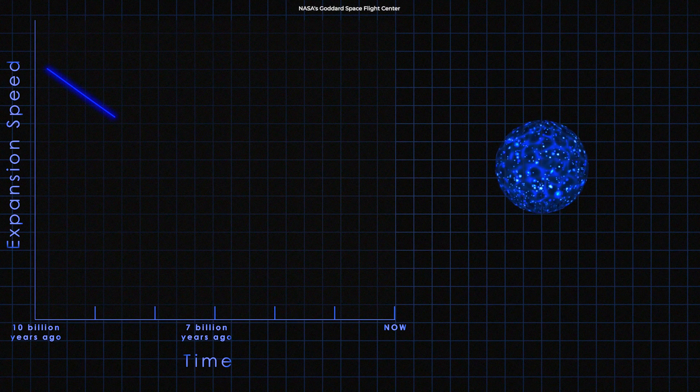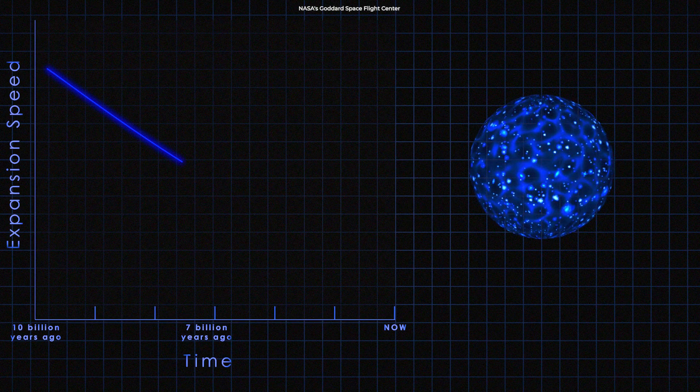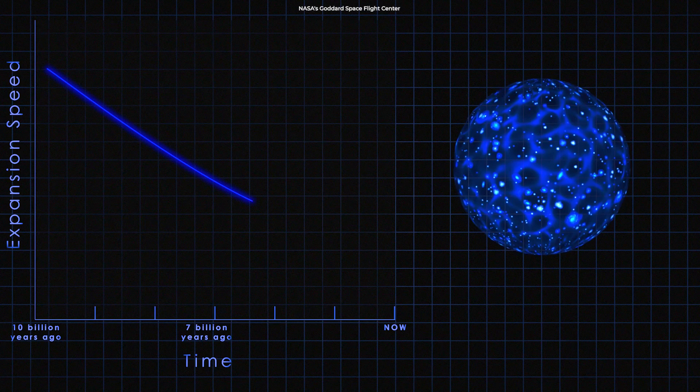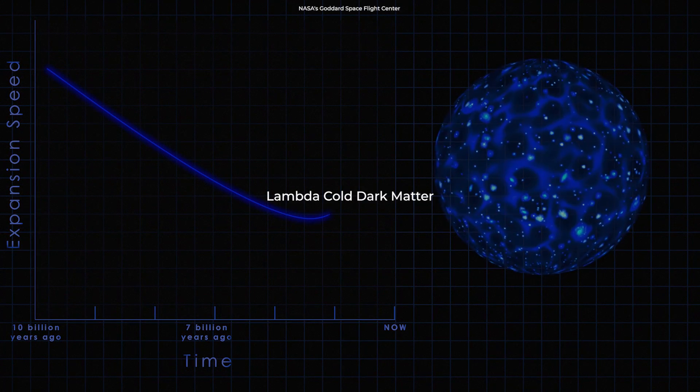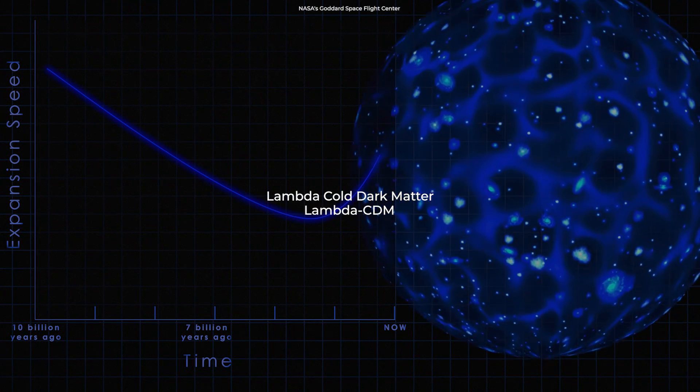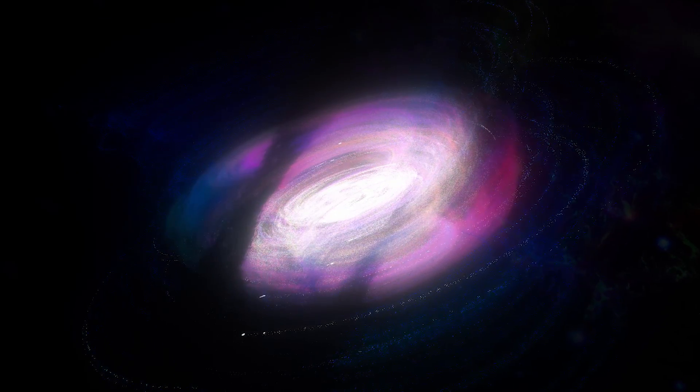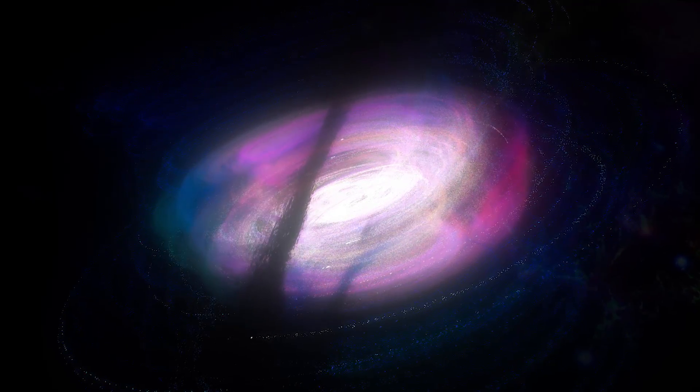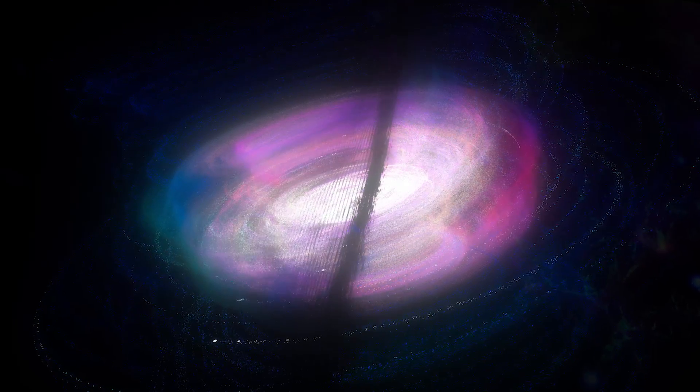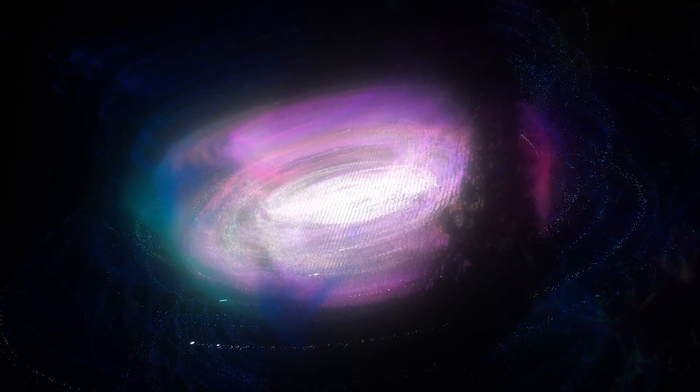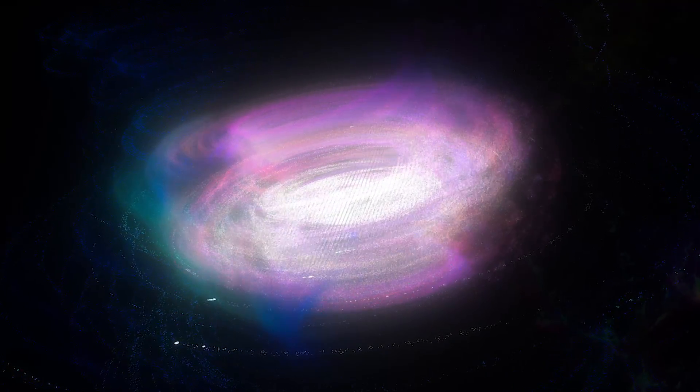Today, dark matter and its cousin dark energy are the main pillars of a cosmological model called Lambda Cold Dark Matter, or Lambda CDM. This model stresses that dark matter affects baryonic matter only via gravity. It doesn't interact with the electromagnetic force, meaning that it doesn't absorb, reflect, or emit light.